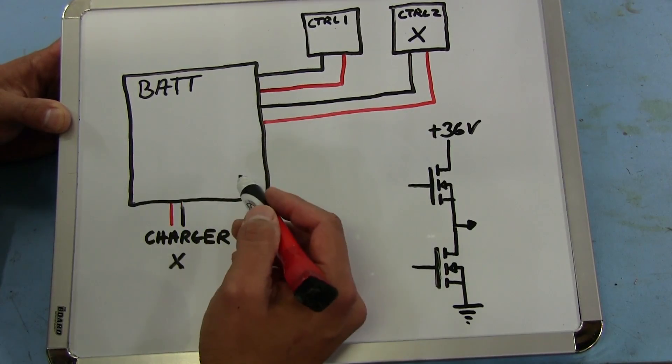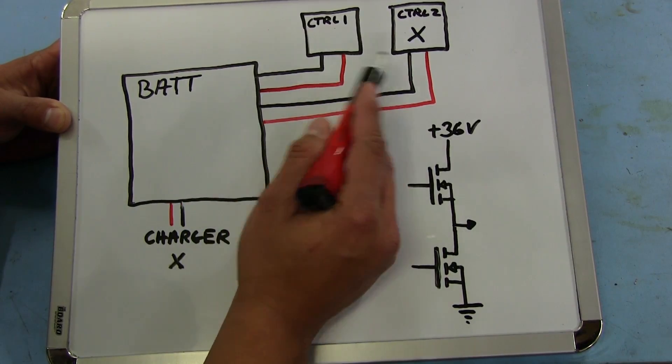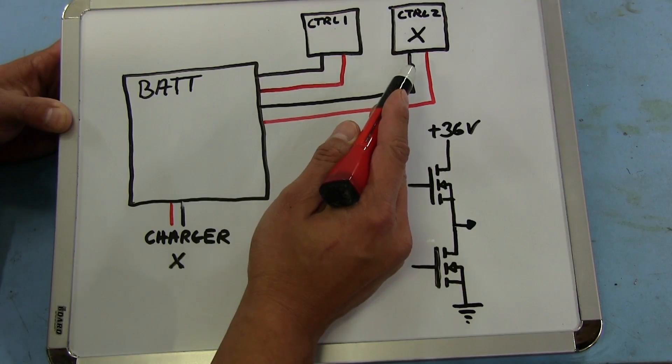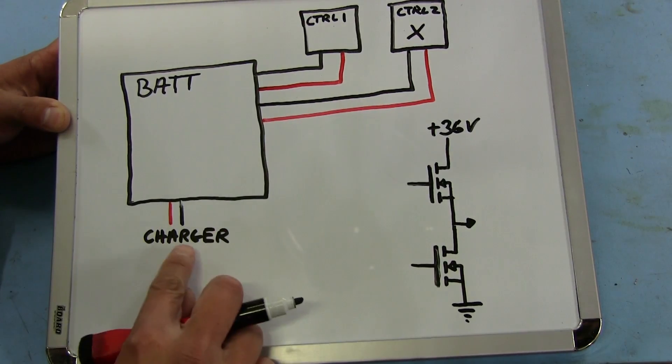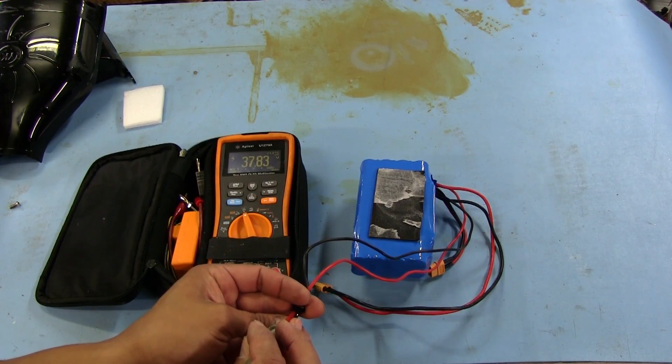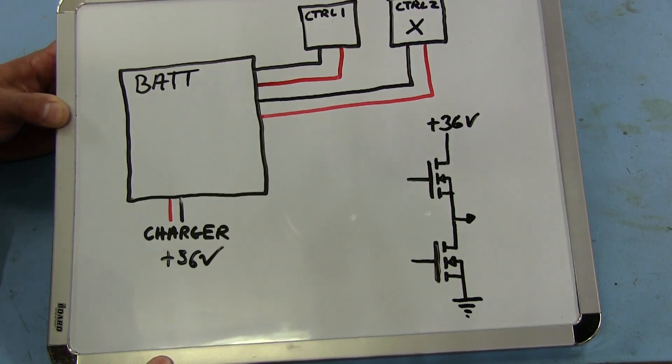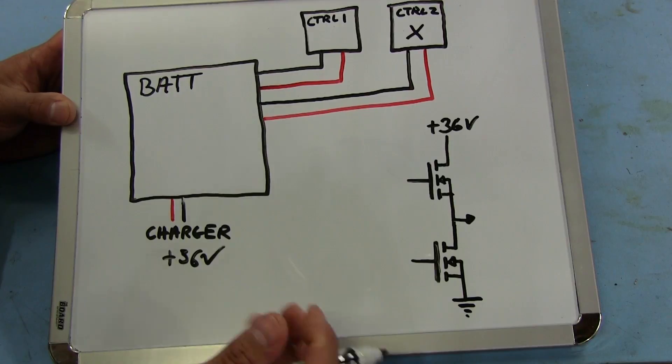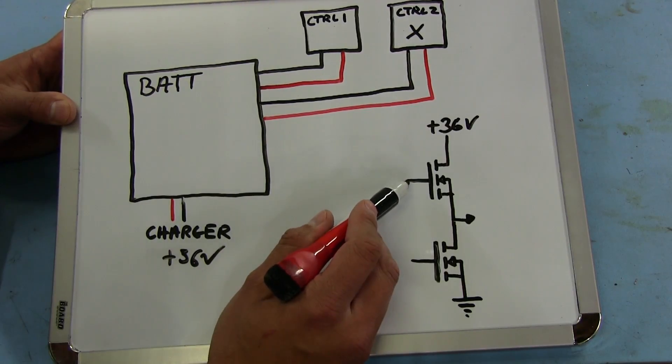However, once I had actually messed with it a little bit and disconnected the two controller boards, we saw that this short went away. We were actually getting the positive 36 volt output, but the only thing that had gone wrong was that the two MOSFETs of one of the phases had shorted out.